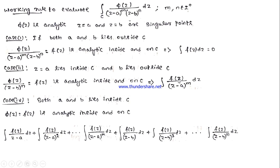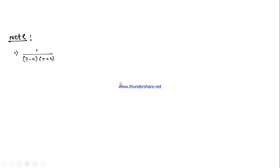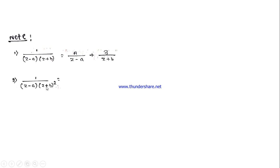Before the example, note that for partial fractions: 1/[(z − a)(z + b)] = A/(z − a) + B/(z + b). If (z + b)² is present, we need two terms: A/(z − a) + B/(z + b) + C/(z + b)². For (z − a)³, we need three terms from (z − a): A/(z − a) + B/(z − a)² + C/(z − a)³ + D/(z + b).